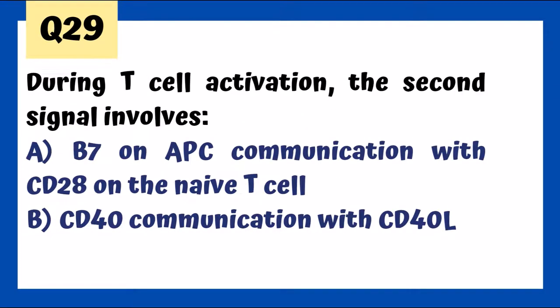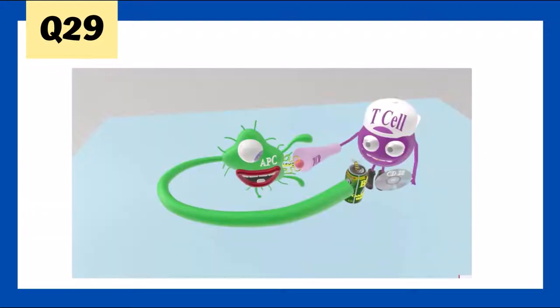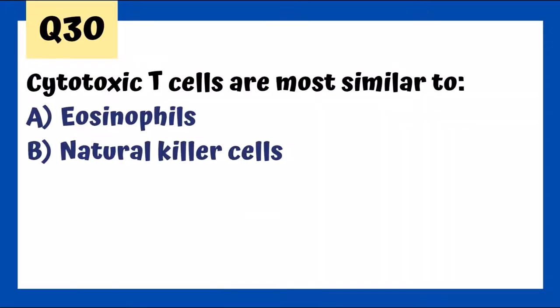During T-cell activation, the second signal involves B7 on the APC communicating with CD28 on the naive T-cell — not CD40 which is for B-cells. In the picture, the B on the 7-up can for B7 binds with CD28 on the T-cell. Cytotoxic T-cells are most similar to natural killer cells — both use perforin and granzyme-dependent systems to induce cell lysis of target cells including tumor cells and viruses.